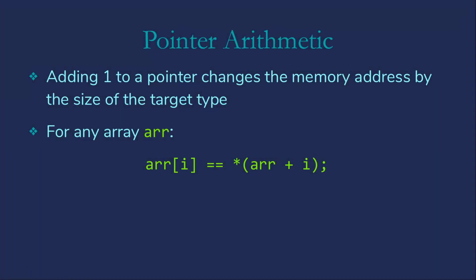Just to reiterate, adding one to a pointer changes the memory address by the size of the target type. Adding three to a pointer changes the memory address by three times the size of the target type. And for any array arr, arr[i] is exactly the same as dereferencing that pointer arr plus i.